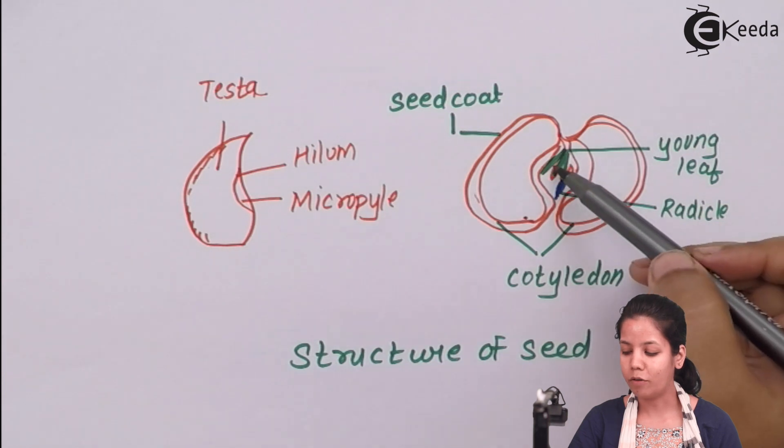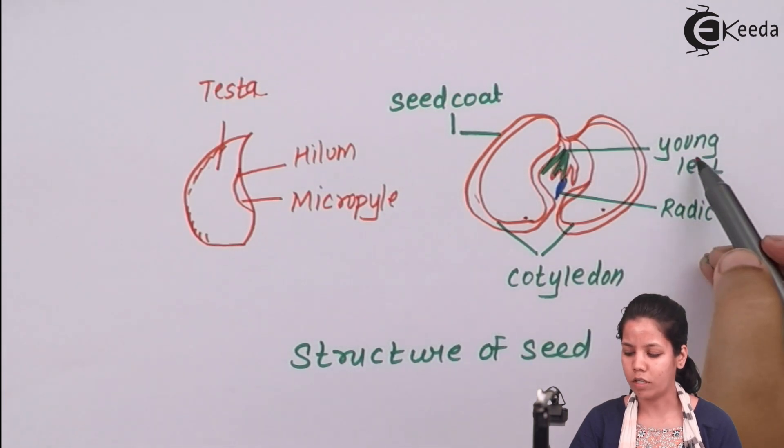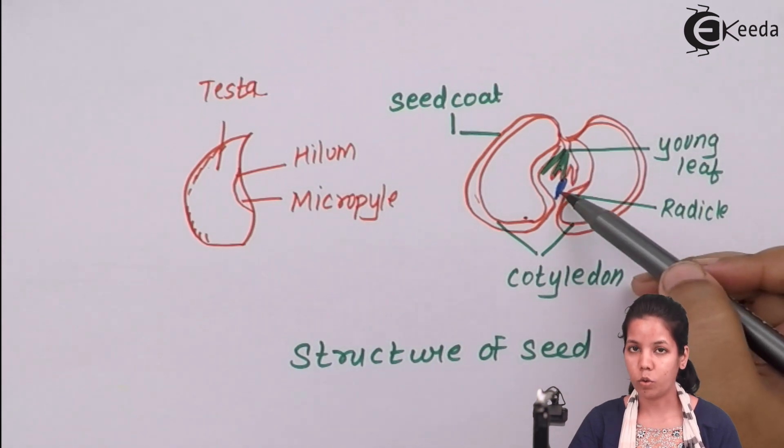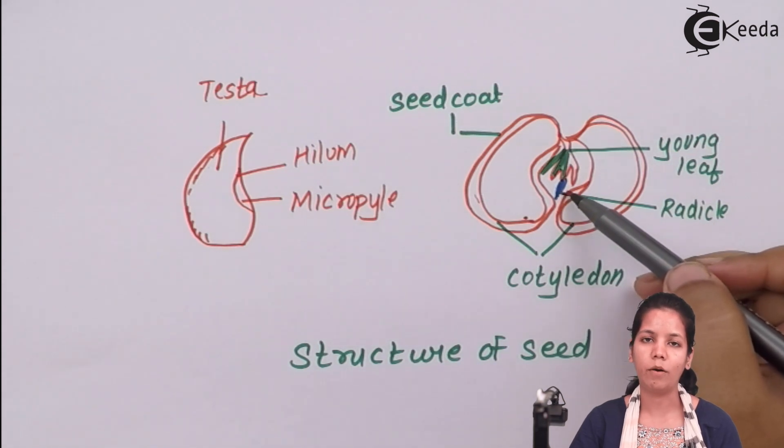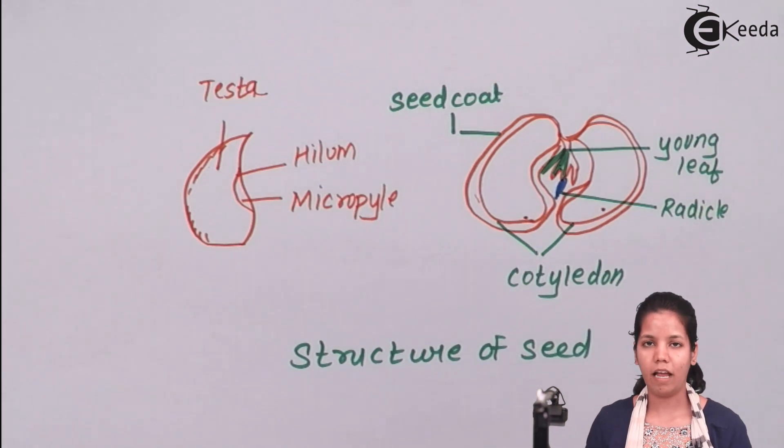Whenever a seed is germinating there will be a young leaf coming out which represents the plumule region. This young leaf along with the plumule will develop into shoot whereas the radicle will develop into the root and hence a young plant will develop from a seed under specific conditions.